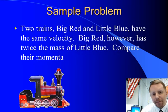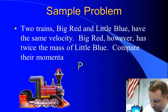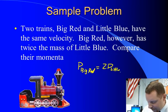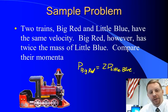Well, since they have the same velocity and Big Red has twice the mass, it must have twice the momentum. Therefore, the momentum of Big Red must be twice as big as the momentum of Little Blue. Very straightforward.